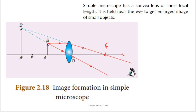So, here is a convex lens. We already know the convex lens ray diagrams. First, how to place the object? This object is placed in between the principal focus and the optical center. This is the optical center, this is the lens, this is the principal focus, and the optical center is on the opposite side. So, this object is at a short focal length.